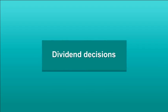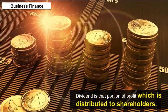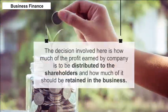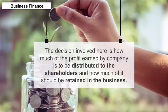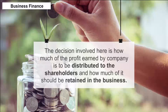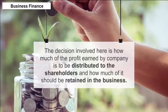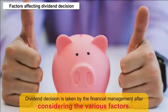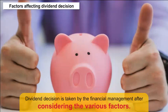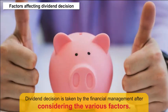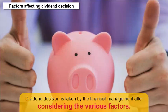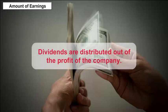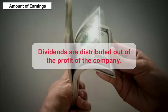Dividend Decisions: Dividend is that portion of profit which is distributed to shareholders. The decision involves how much of the profit earned by the company is to be distributed to shareholders and how much should be retained in the business. Factors affecting dividend decisions are considered by financial management, the important ones discussed below. Amount of Earnings: Dividends are distributed out of the profit of the company; therefore, earnings are a major determinant of the dividend decision.